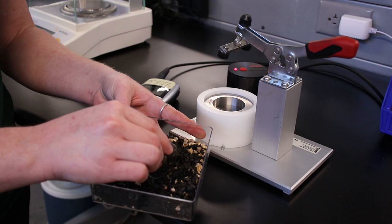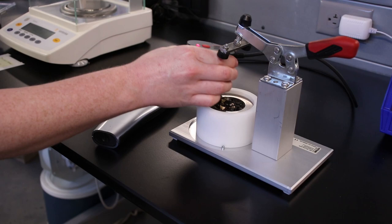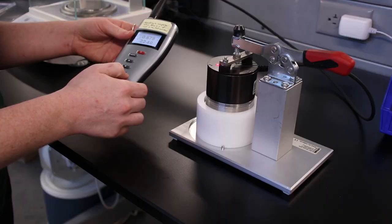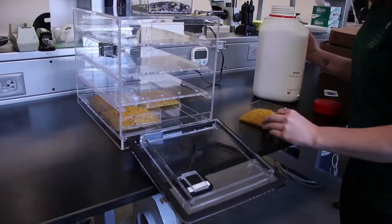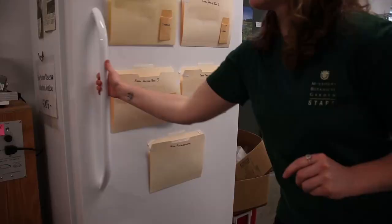We measure their water activity, or AW, before and after drying. A sample cup is filled and placed in a water activity meter. Freezing seeds that contain too much water can kill them. We dry the seeds in desiccation boxes containing silica gel. The boxes then go into the refrigerator to dry, which usually takes about two weeks.